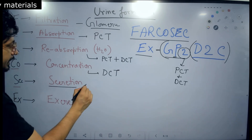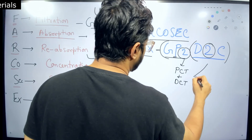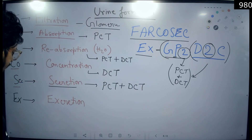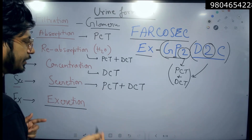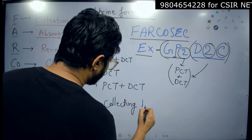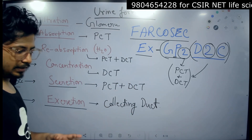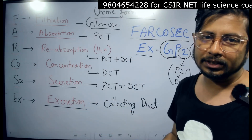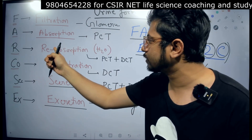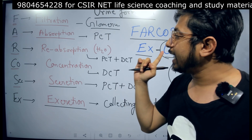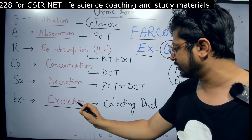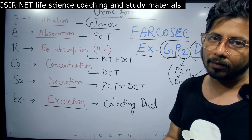Then we have secretion — secretion is again D2C: '2' means both PCT and DCT are involved in secretion. The last one is excretion, and C means collecting duct — the collecting duct. So: filtration in glomerulus; absorption in proximal convoluted tubule; reabsorption of water in PCT and DCT, and not only water but other nutrients as well; concentration in distal convoluted tubule; secretion in PCT and DCT; excretion by the collecting duct — collecting all the urine into concentrated form, then releasing it out.